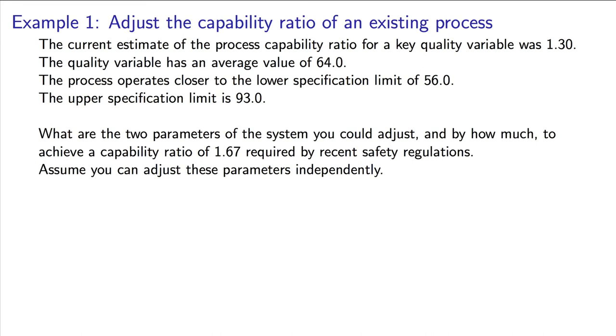Which two parameters in the system can we adjust, and by how much, to achieve a desired capability ratio of 1.67? For example, recent safety regulations might just have been put in place, and we need to improve our capability.